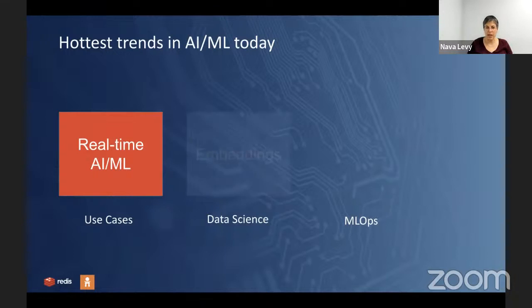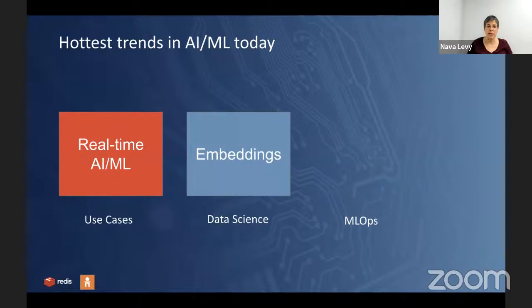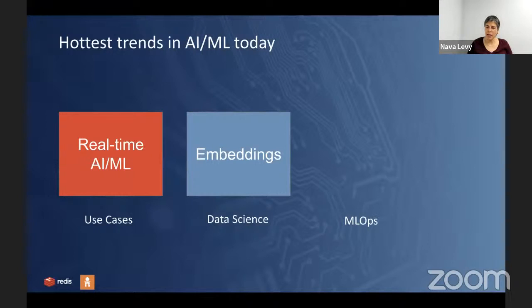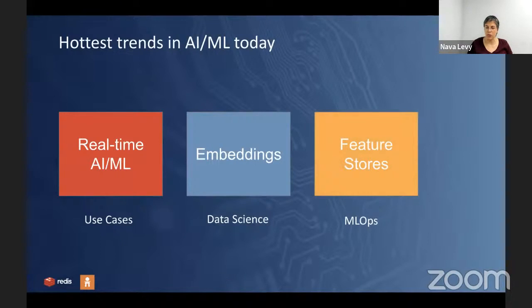Across data science, the most exciting development, especially in applied data science, is embeddings — those dense vector representations that capture the deeper meaning of the object they represent. For machine learning operations, or MLOps, the feature store is the cornerstone of the MLOps platform and is emerging as a very important component. Redis has two focus areas: the intersection of embeddings and real-time AI, which is vector similarity search or neural search, and the intersection of feature store and real-time AI/ML, which is the online feature store.